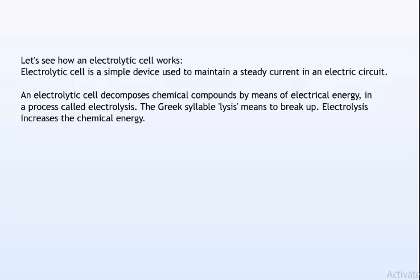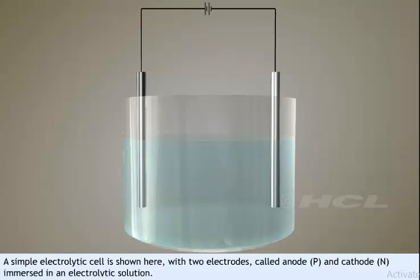The result is that the chemical energy is increased. A simple electrolytic cell is shown here. Two electrodes, the positive P and the negative N as shown in the figure, are immersed in an electrolytic solution.